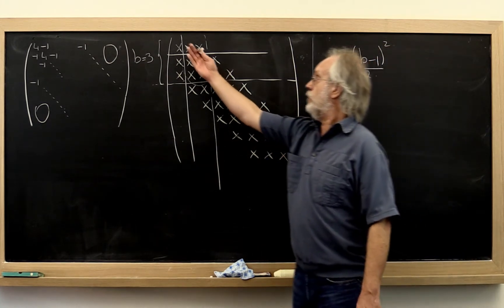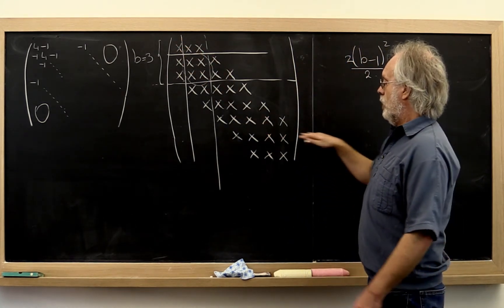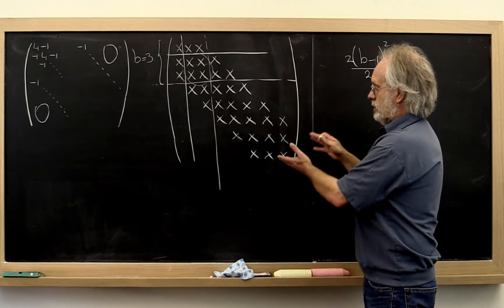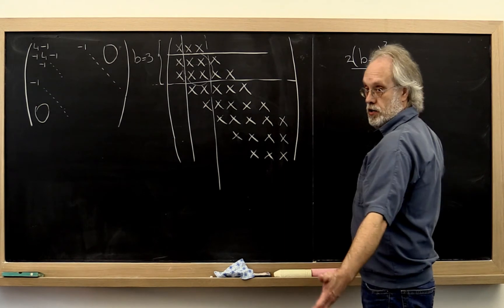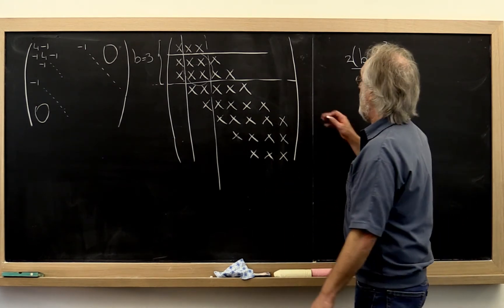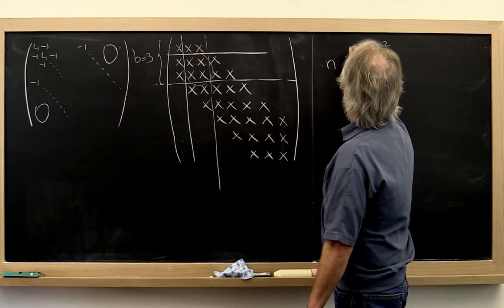And roughly speaking, we need to do that for every entry on the diagonal. Of course, once you run out of matrix here, there would be a little bit less work to be done. But if the matrix is large enough, that's roughly what would happen. So we would have to do this roughly n times.